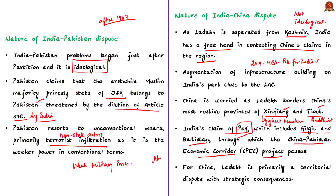For China, Ladakh is primarily a territorial dispute with strategic consequences. China has a superior military force, so it is resorting to confrontations across the Line of Actual Control to underline its claims. China is concerned about the changing status quo in Ladakh, not in the Kashmir region. Pakistan, however, is committed to using all means to change the status quo in Kashmir in its favor. The author thus differentiates the two disputes: one is ideological and the other is strategic.